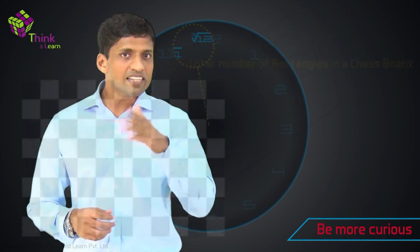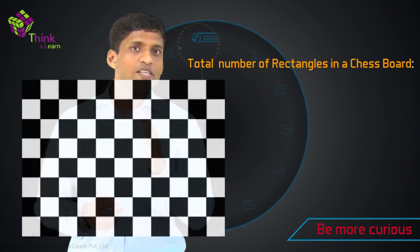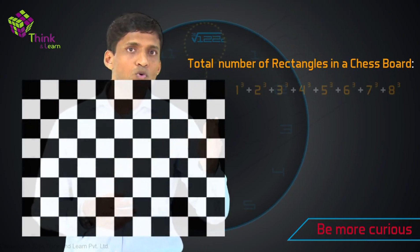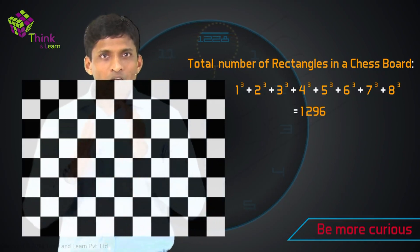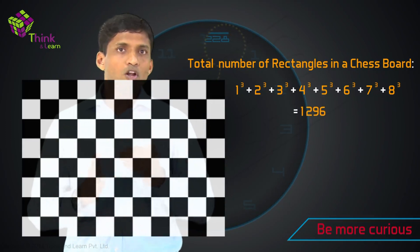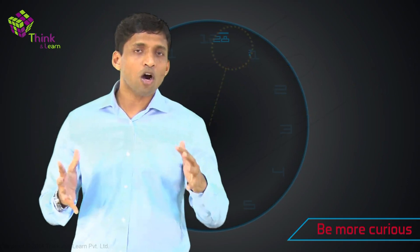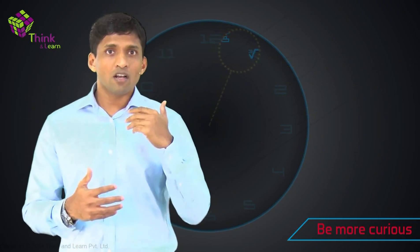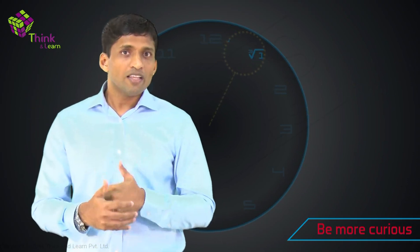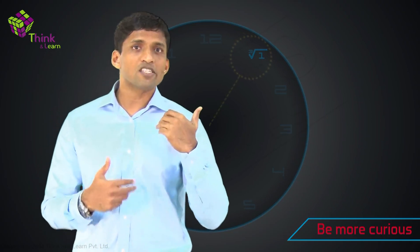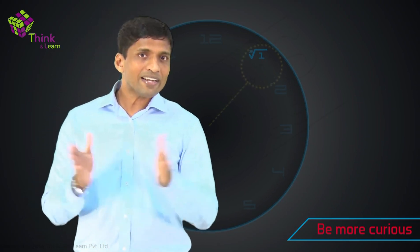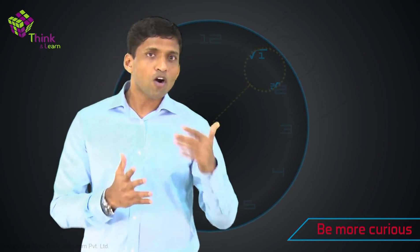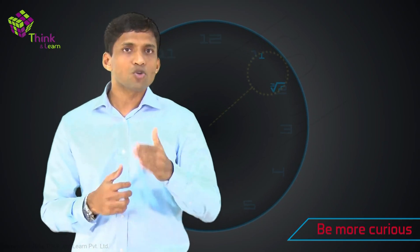So the total number of rectangles in a chessboard, which is an 8 by 8 grid, will be the sum of the first 8 perfect cubes — 1 cube plus 2 cube plus 3 cube up to 8 cube. This is not required for your exam, but now you know a lot more about perfect cubes, squares, and triangular numbers, because you know how all of them are connected. First we learnt it using numbers, and it became much simpler after visualising things in simple diagrams. By connecting different formats — numbers, diagrams, words, variables — you reach a much higher level of understanding.